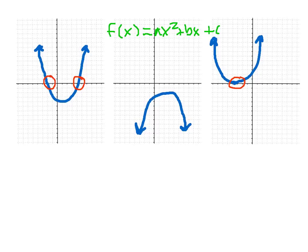If you think about that — when our function is equal to zero, our output is zero. And in this case, whenever our function is equal to zero, that point is going to be an x-intercept because our output is zero.